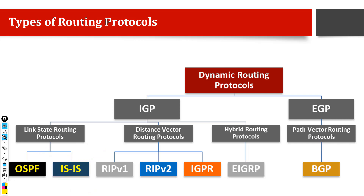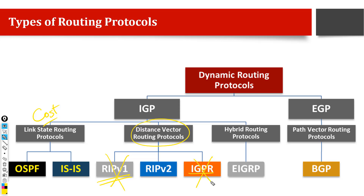OSPF is the winner in the Link State category, but IS-IS is recently gaining popularity in Nokia networks and data center networks because of its TLVs — a feature that allows you to add newer extensions into IS-IS instead of developing a new routing protocol from scratch. The Dijkstra algorithm decides paths based on cost. Under Distance Vector routing protocol we have three major protocols: RIP version 1 was a classful routing protocol and is not being used anymore; IGRP was also an old protocol no longer used. RIP version 1 and version 2 have a hop count limit of 16 and make decisions based on hop count — whichever path has fewer routers, that path is chosen.